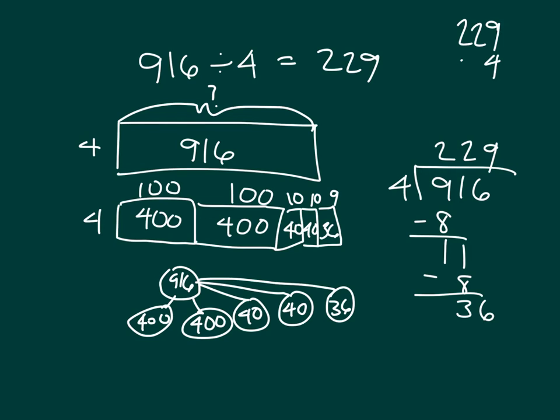Writing our check very quickly there. 6, 3, 8, 11, 1, 1. 4 times 2 is 8, plus 1 is 9. So, I have that 916 there. So, there is a connection between the area model of division and the standard algorithm.